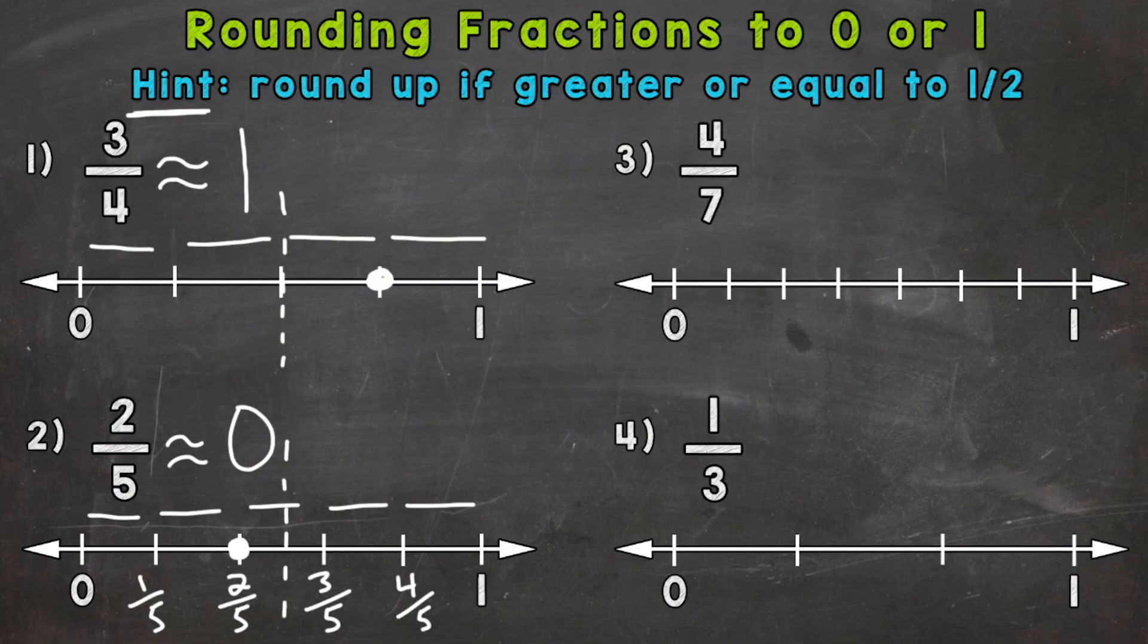So number 3 here, we have 4 sevenths. So 1 sevenths, 2 sevenths, 3 sevenths, 4 sevenths, 5 sevenths, and 6 sevenths. So 4 sevenths is right here. And half of 7 is 3 and a half, so this would be the halfway point here. So we're to the right of that, so we are closer to 1. So 4 sevenths rounds to 1.